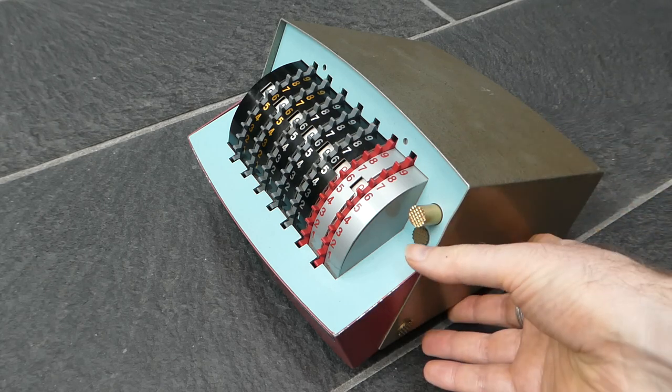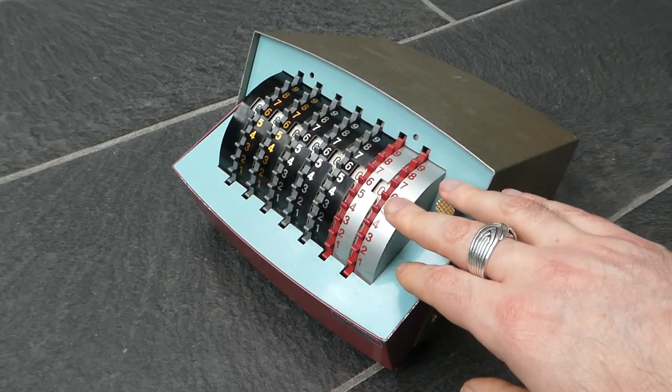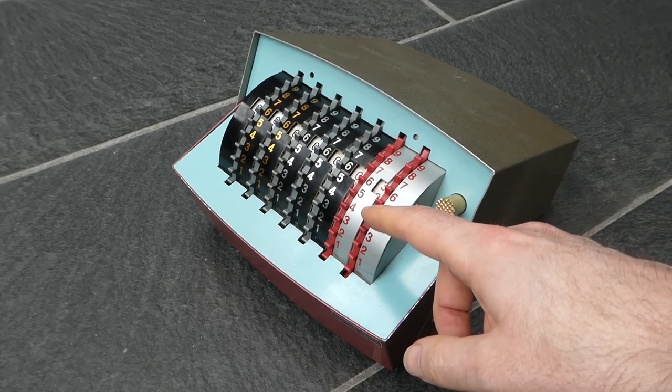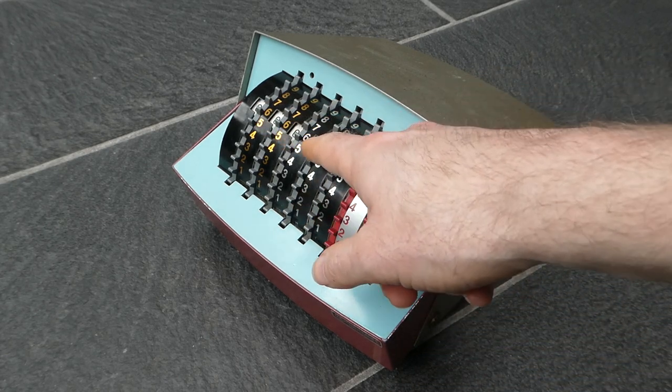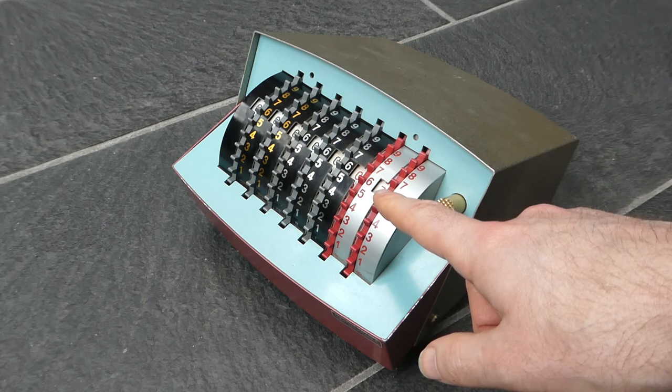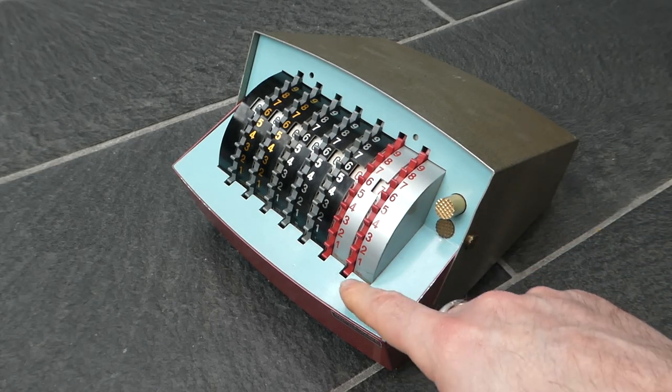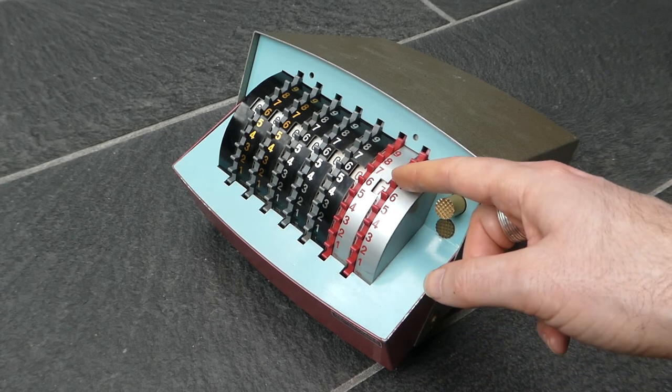It's a very simple machine. It uses these number wheels at the front. You use your fingers to move them. There's an opening here where you can see the current total, the current register. To add a number, you just put your finger next to the digit you want to add and pull it down.